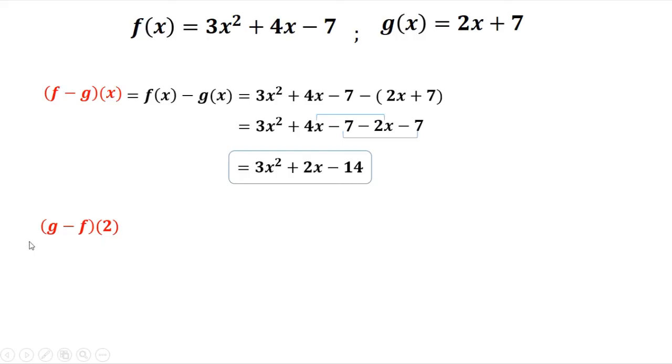Now second example, that's g of 2 minus f of 2. So from g of x, 2x plus 7, but x is 2, so that's 2 times 2 plus 7. Then minus f of x. Again, your second function should be inside the parentheses.